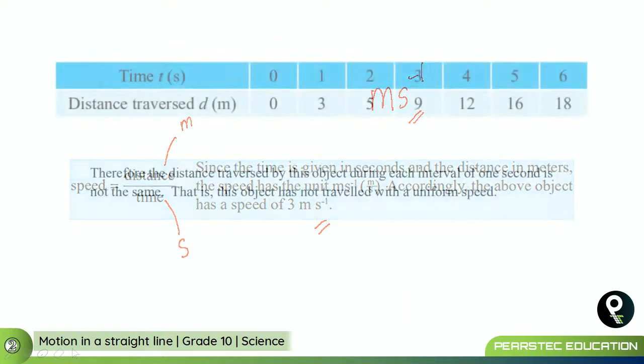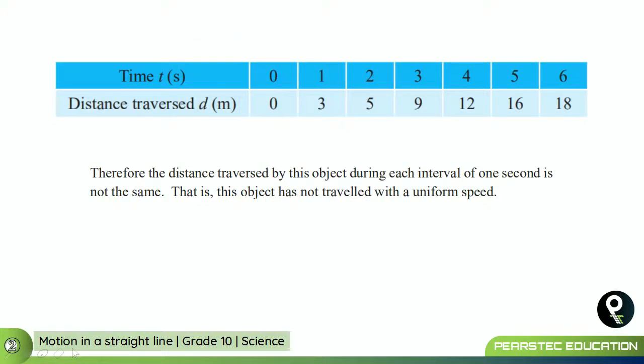Now, there is another thing that you should understand in this particular chart, which says the distance traversed in 1 second is 3. In 1 to 2, it is moving 2 meters. And 2 to 3, it is moving 4 meters. And 3 to 4, it is moving another 3. 12 to 16, it is 4. And 16 to 18, it is 2. 0 to 1 second, it traveled 3 meters.